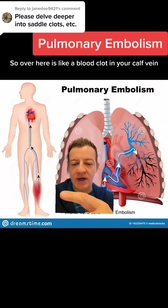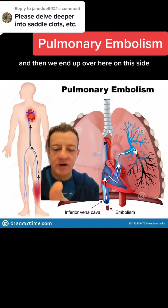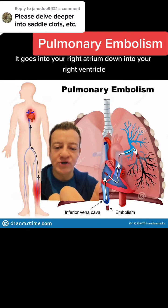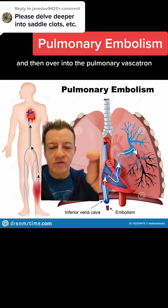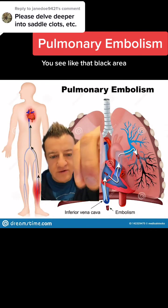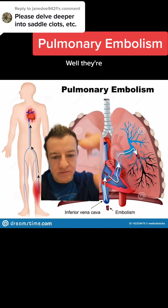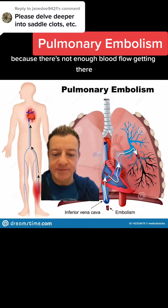So over here is a blood clot in your calf vein. It breaks off, goes to your heart, and then we end up over here on this side — it goes into your right atrium, down into your right ventricle, and then over into the pulmonary vasculature, where it gets stuck right at that point. You can see that black area — the pulmonary arteries became black because there's not enough blood flow getting there.